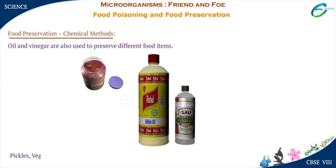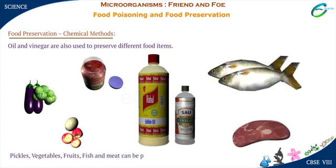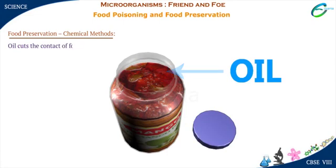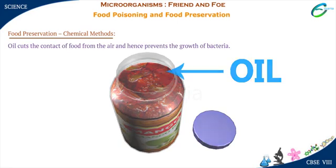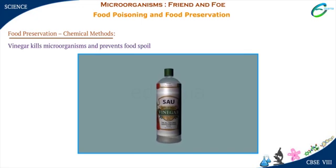Pickles, vegetables, fruits, fish and meat can be preserved by using oil and vinegar. Oil cuts the contact of food from the air and hence prevents the growth of bacteria. Vinegar kills microorganisms and prevents food spoilage.